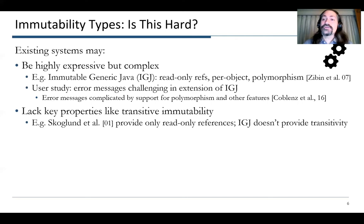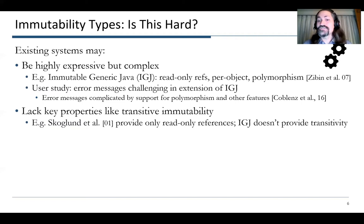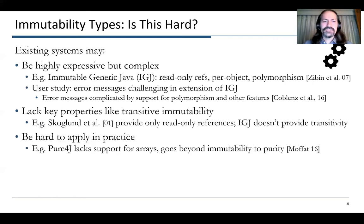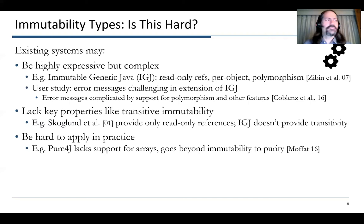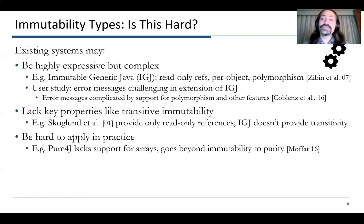Furthermore, a lot of these systems lack some key properties. One very natural property is transitive immutability — the idea that an entire data structure is immutable. Some work in the literature provides only a piece of this: read-only references perhaps, or immutability for one object but not for a whole transitive group of objects. There's also a lack of support for things like arrays, which are a very key piece of data structures. Going beyond immutability to purity might be useful, but comes with a lot of compromises — you can't touch any mutable data, even in operations where your data structure itself is immutable.